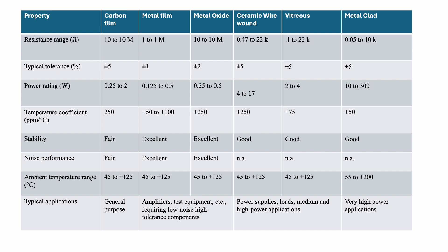For 0.2 watt, we can use three types of resistors which are all less than 2 watt: carbon film resistor, metal film resistor, and also metal oxide resistors.